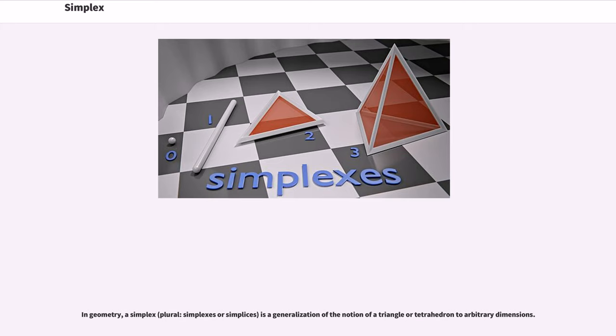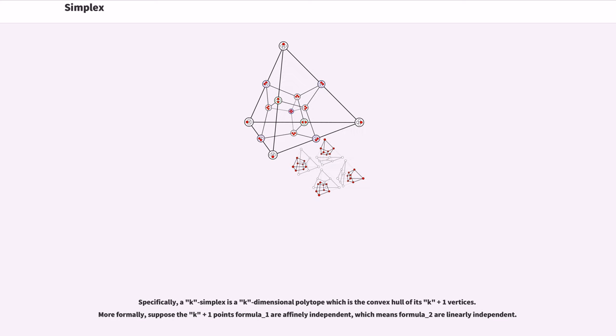Simplex. In geometry, a simplex is a generalization of the notion of a triangle or tetrahedron to arbitrary dimensions. Specifically, a k-simplex is a k-dimensional polytope which is the convex hull of its k plus 1 vertices. More formally, suppose the k plus 1 points are affinely independent, which means they are linearly independent.